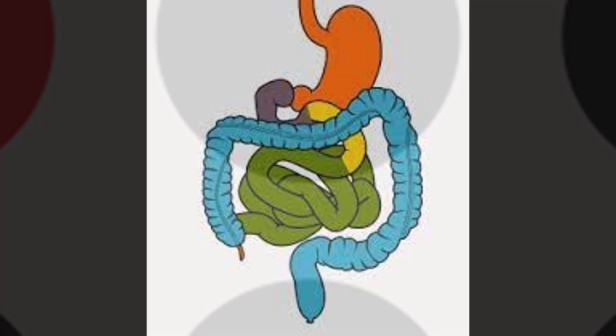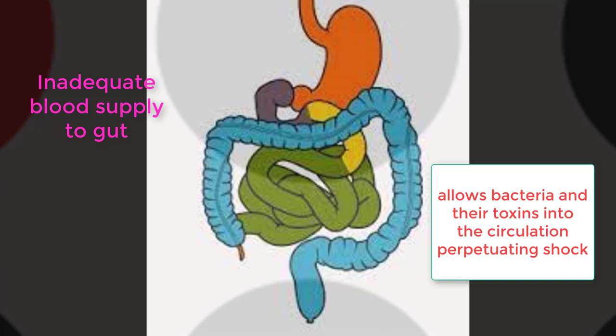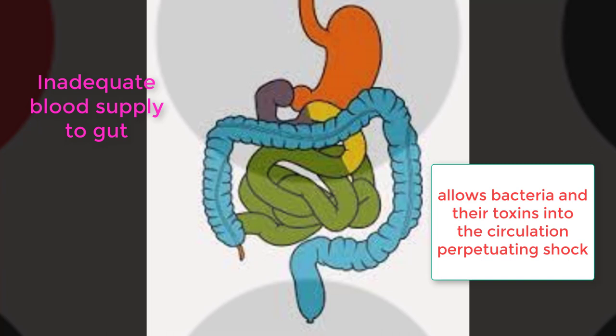Inadequate blood supply to the gut can otherwise allow innocuous inhabitants of the bowel to cross the bowel wall into the blood supply to cause sepsis. There's a theory that this is the engine of irreversible shock. That is, one can pass the point of no return where it's no longer possible to salvage the patient.